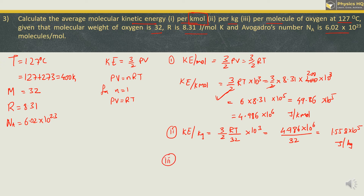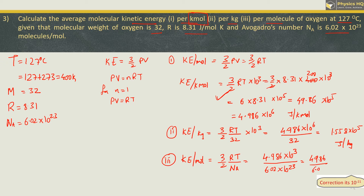For kinetic energy per molecule, divide (3/2)RT by Avogadro's number. Here we use (3/2)RT = 4.986 × 10³ (per mole, not per kilomole), divided by 6.02 × 10²³. This gives 49.86 / 6.02 × 10⁻²⁰ = 8.282 × 10⁻²¹ joules per molecule.